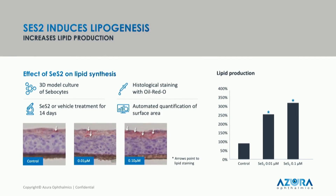What hasn't been published before is the mechanism of action by which selenium disulfide is lipogenic. We've demonstrated in a 3D cellular model that we can increase lipid production from sebocytes by about 200%, both with our lead compound selenium disulfide and with other backup compounds.